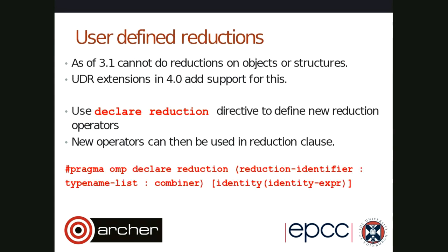Let's start off with user-defined reductions. This has long been a complaint from C++ programmers that prior to 4.0, it wasn't possible to do reduction operations on anything other than basic types in the underlying language. You couldn't do reduction operations on objects or on structures. But 4.0 added support for this. The way this works is that you have a declare reduction directive to define new reduction operators, and those operators can then be used in the reduction clause in the standard way — instead of 'reduction plus colon something', you can define your own operators.